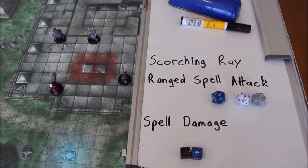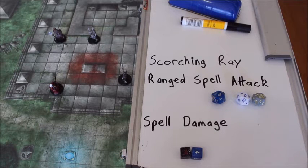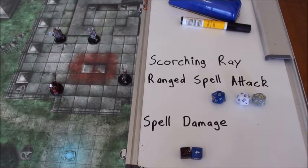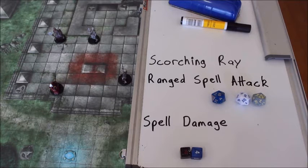Scorching Ray is a second level spell. It is an evocation spell, so it creates an elemental effect when you cast the spell. It has a casting time of one action, which means you can't cast a bonus action spell or make an attack with your weapon during that round — you can only cast Scorching Ray. It has a range of 120 feet. It has a verbal and somatic component, which means you speak a few arcane words and perform a magical gesture, and you can create three rays of fire and hurl them at a target within your range.